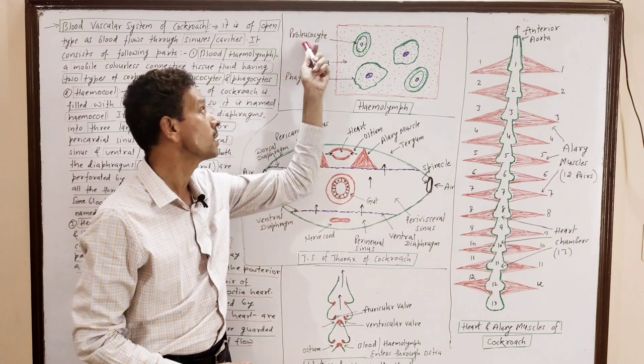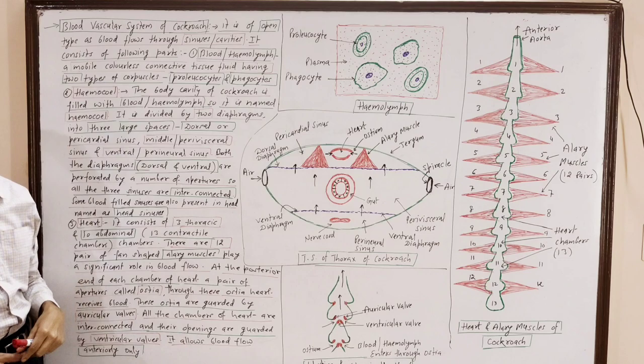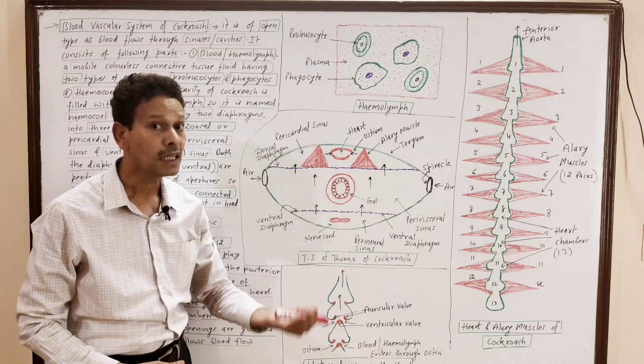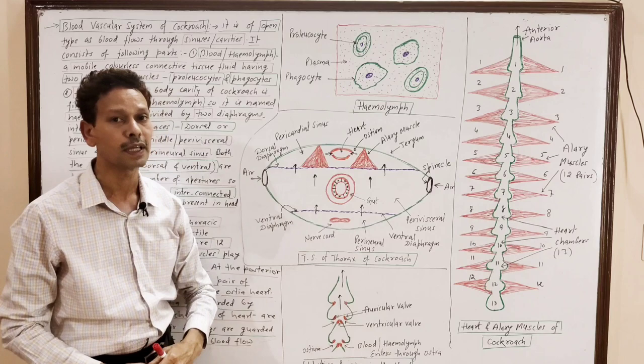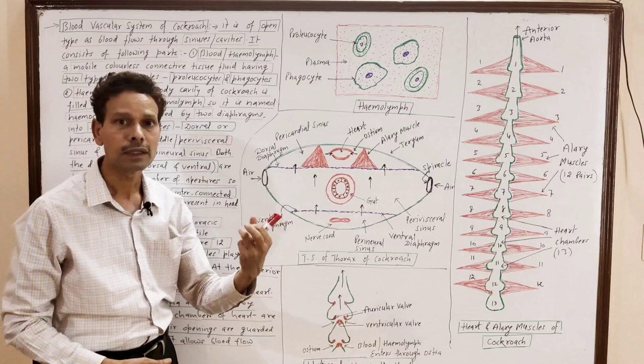The second component of the blood vascular system of cockroach is the hemocoel. Hemocoel means blood cavities. These blood cavities are named sinuses. In these sinuses, the colorless fluid — hemolymph, which is blood — is present. These cavities filled with blood are named hemocoel.